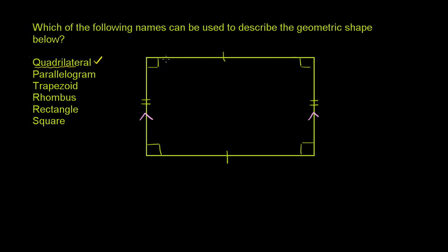This line up here forms a 90-degree angle with this side. And so does this side — it forms a 90-degree angle with this line right over here. They form the same angle with this line, so they're parallel. This side is parallel to that side right over there. So this is definitely also a parallelogram.